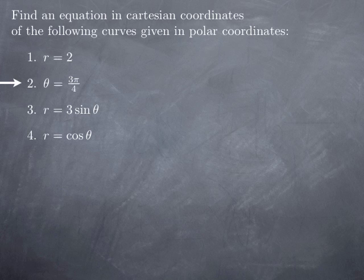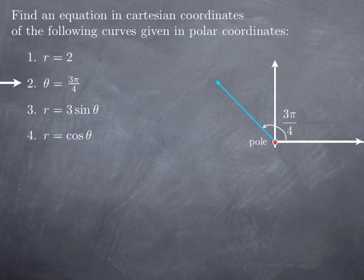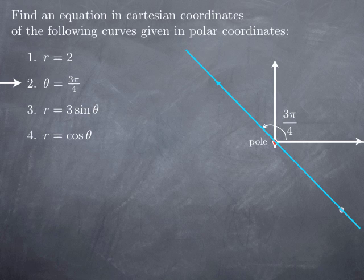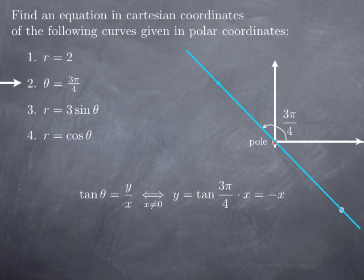The second example is the curve θ=3π/4. Geometrically, if I point in the direction 3π/4 with no condition on r, as r increases I move away in that direction, and for r negative I go to the other side. So with no restriction on r, I end up with this line through the origin. Its equation: since tan(θ)=y/x, we get y = tan(3π/4)·x = −x, because tan(3π/4)=−1.